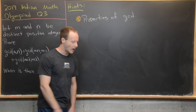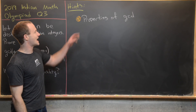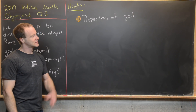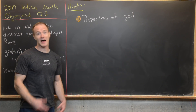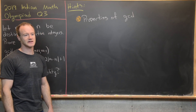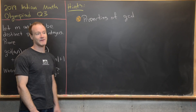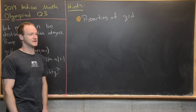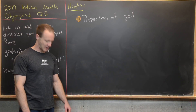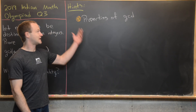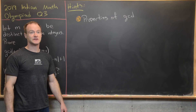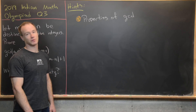The big hint for this problem is to remember all your properties of the GCD. If you're well-versed in math contests and especially number theory problems, you should have half a dozen or more properties of the GCD at the ready. We're actually going to start this video off by proving some of those properties.